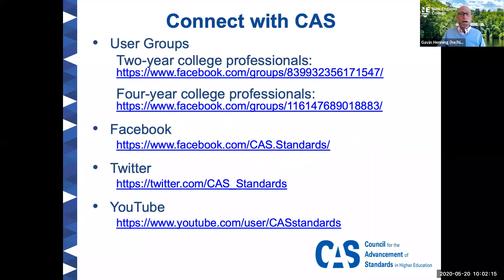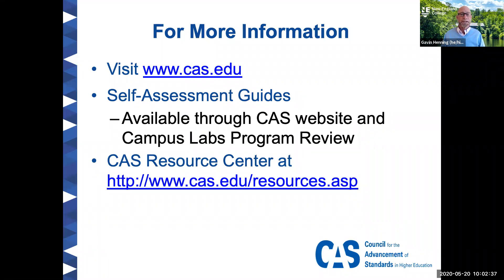We have a lot of CAS information and resources. If you want to learn more, we've got user groups on Facebook for people who work at two-year and four-year institutions. We post information and new resources on our Facebook page as well as Twitter. We also have a YouTube channel where we upload different resources and workshops. For more information, you can go to CAS.edu — there are lots of resources there as well as a link to our store where more resources can be purchased. For campuses that are Campus Labs users, you can also access the functional area standards and cross-functional frameworks through the Campus Labs platform. Hopefully this module on using CAS has helped you ensure an equitable program review process.